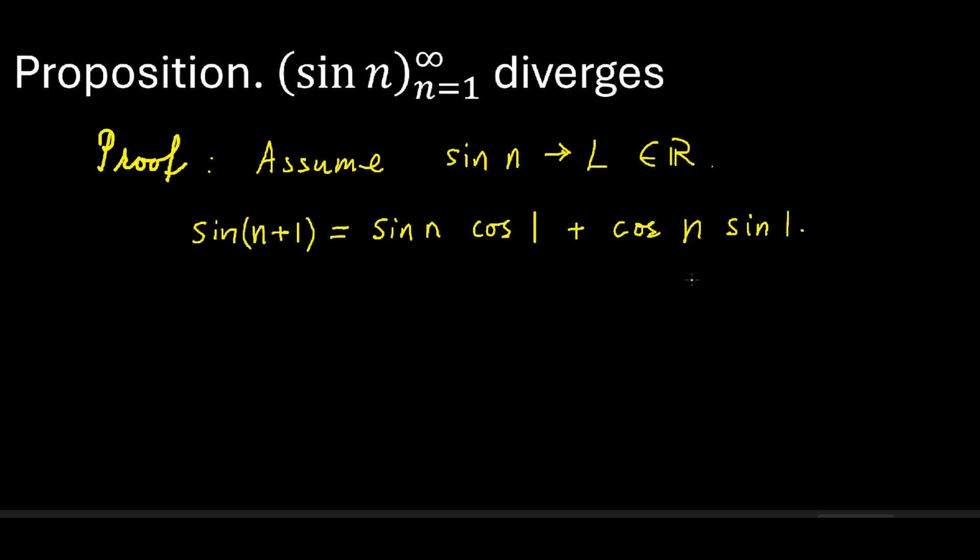This is called the addition theorem for the sine function. And now we're going to take the limits on both sides. And we see because sine of n is assumed to converge to L, the left hand side also converges to L. And on the right hand side, we also have sine of n times cosine of 1. So the first term converges to L times cosine of 1.